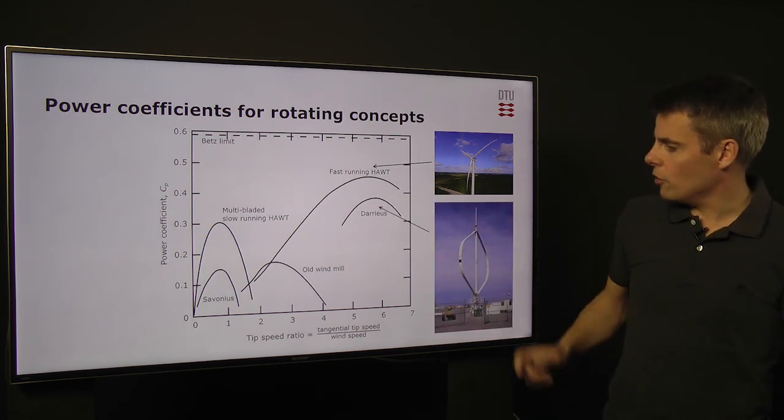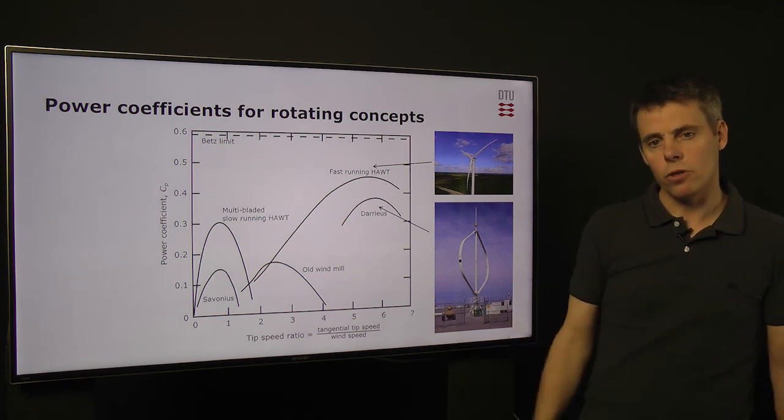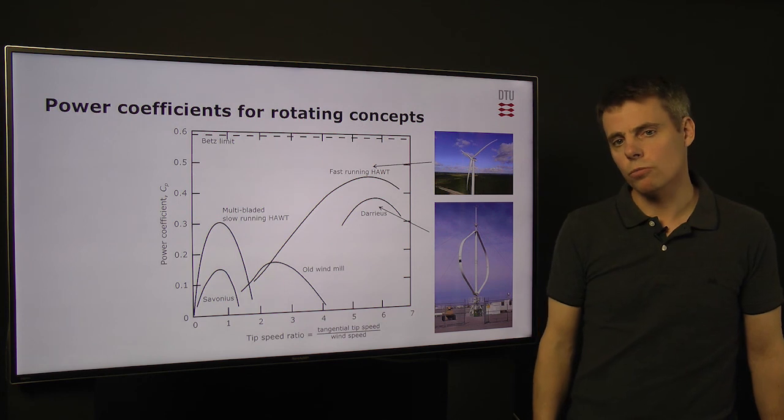We also have the vertical axis turbine, the Darrieus turbine, which also are running with quite high tip speed ratio and also produces relatively high power coefficients.